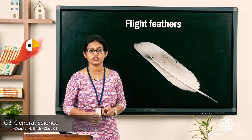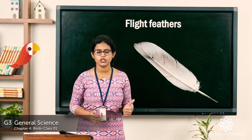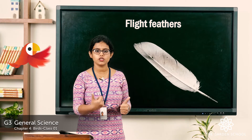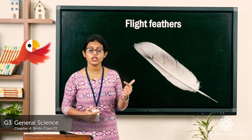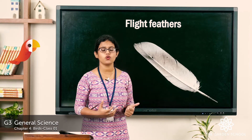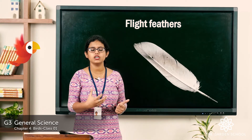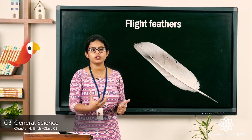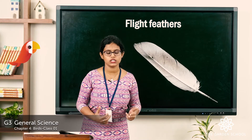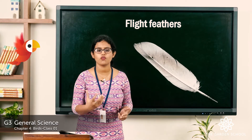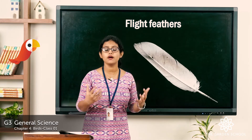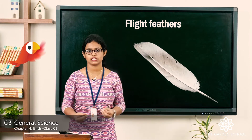So which are the three types of feathers? The body feather covers the body of the bird. The down feather makes the body of the bird warm and keeps the body warm. And the flight feather helps the bird to fly — it is present on the bird's wings and tail.